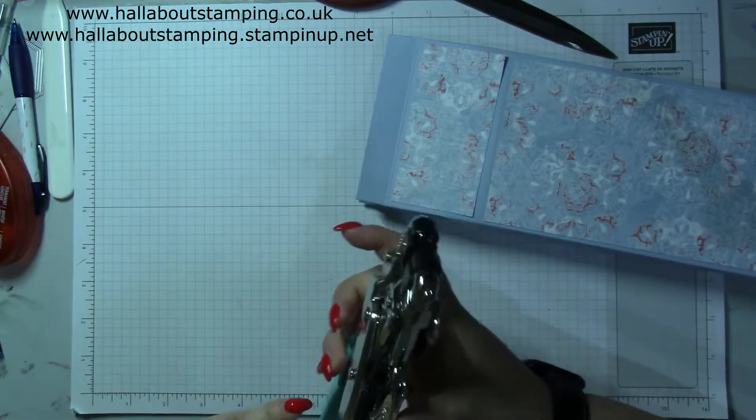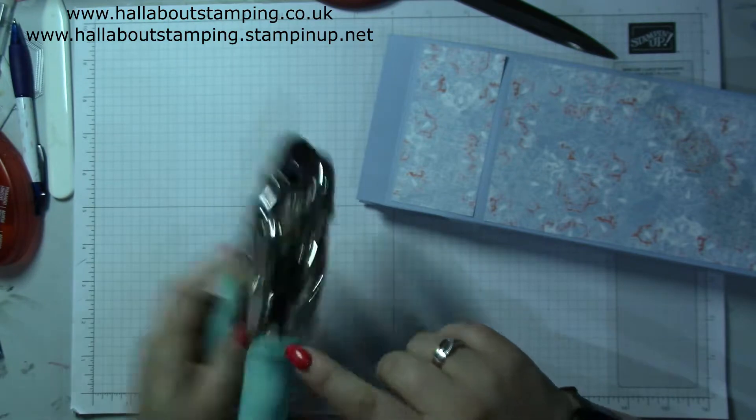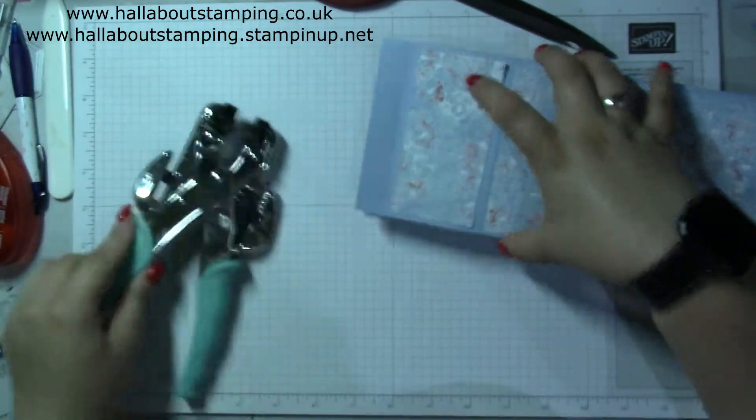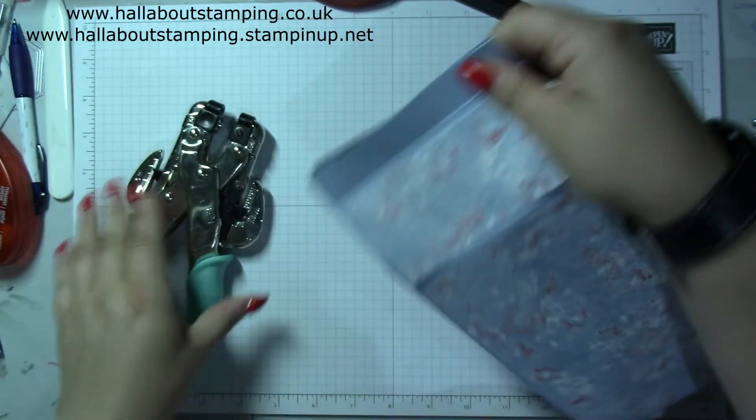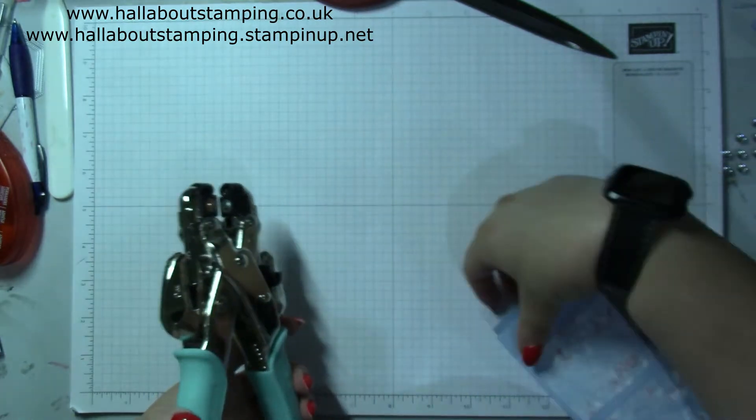Right, hole punch, large hole punch. It's clogged up. Punch a couple of holes and then we're gonna thread some ribbon.